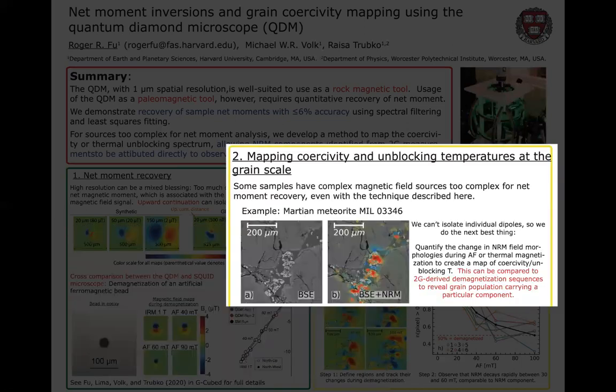However, there are always going to be cases where the magnetization sources are simply too complex for even upward continuation to isolate the moment. In these cases, we can still recover some useful information using the QDM. Specifically, we developed a technique to look for changes in a magnetic field map during AF or thermal demagnetization, so we can characterize the coercivity or thermal unblocking spectrum of a source without explicitly quantifying its net moment.